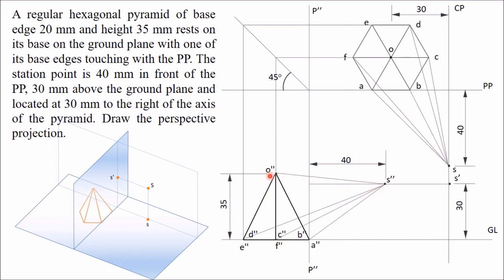I have joined S double dash with O double dash, E, D, F, C, A, B — all points — and in this way you get the intersection points with the picture plane. Once you have intersection points from the top view and from the side view, from the top view draw a vertical line, and from the side view draw a horizontal line. The intersection of these two lines gives you the corresponding point in the perspective view.